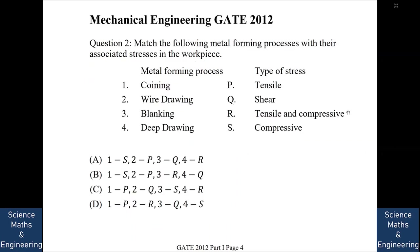Match the following metal forming processes with their associated stresses. We have coining, wire drawing, blanking, and deep drawing. The types of stresses are tensile stress, shear stress, tensile and compressive stress, and only compressive stress. We are given certain option combinations and the answer is C.